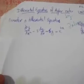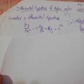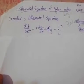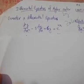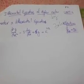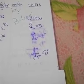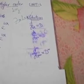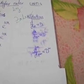Bismillahirrahmanirrahim. This lecture is about differential equations of higher order. For example, we have a differential equation of this type: d²y/dx² minus 5 times dy/dx plus 6y equals e raised to power 4x. We will utilize operators where d/dx is denoted by capital D, d²/dx² by capital D², and so on.